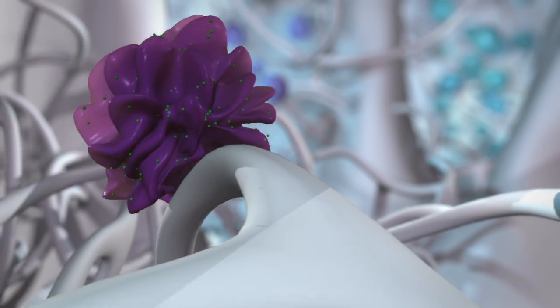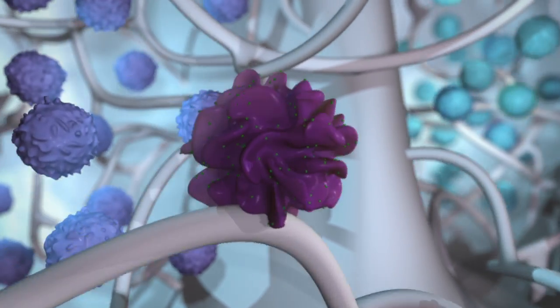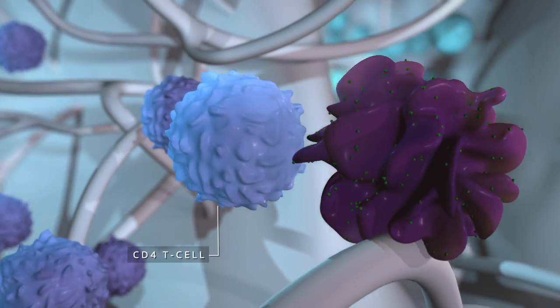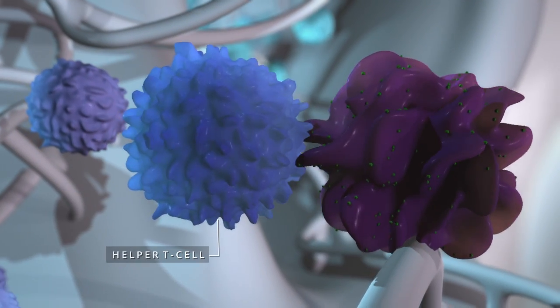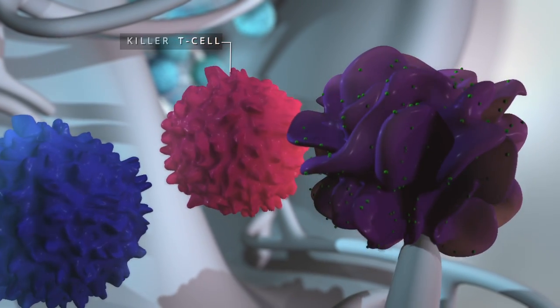Within the lymph node, the dendritic cell presents viral peptides to two types of T cells. The CD4 T cell, which differentiates into a helper T cell, and the CD8 T cell, which differentiates into a killer T cell.